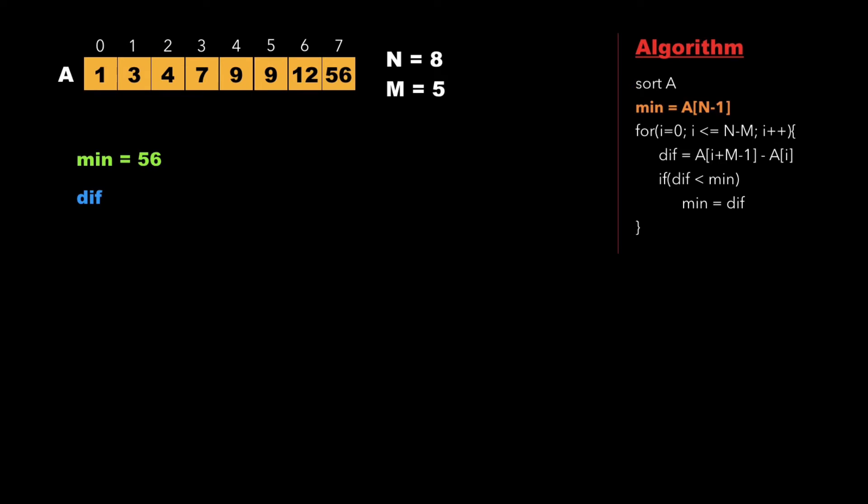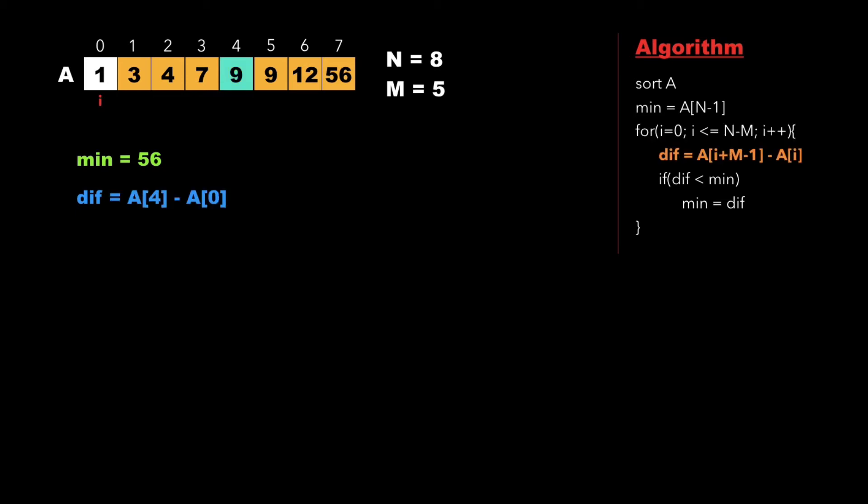After sorting the array in ascending order, we initialize the min value as a[n-1], that is the last element of the array. Then we run a for loop from i equal to 0 to i less than or equal to n minus m — in our case, i less than or equal to 3. We calculate the value of diff as a[i + m - 1] minus a[i].